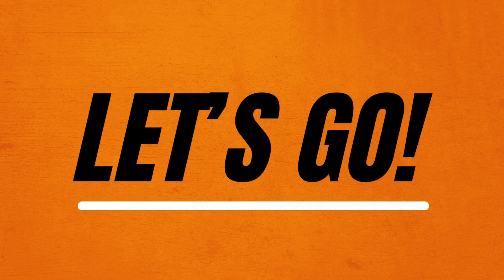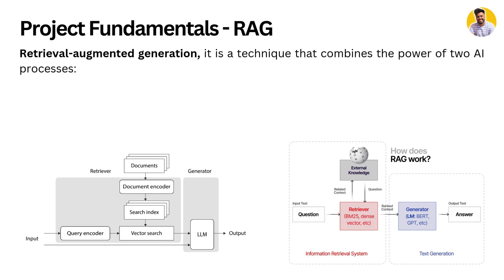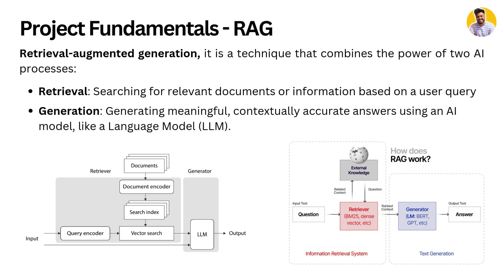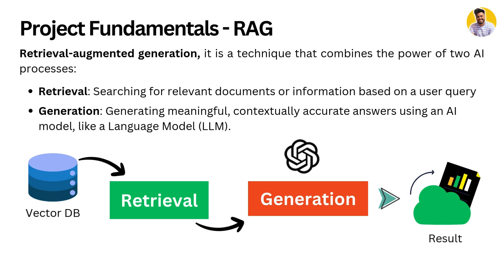If you are very new to RAG, don't worry — we'll walk through everything step by step. RAG stands for Retrieval-Augmented Generation. It is a technique that combines two AI processes: retrieval (searching for relevant documents or pieces of information based on the user prompt) and generation (generating meaningful, contextually accurate answers using a generative AI or large language model). We retrieve information from a database or vector store and then use that information to generate answers via an LLM. This is what makes RAG powerful.